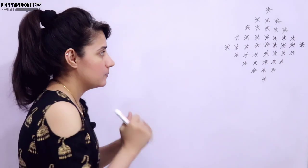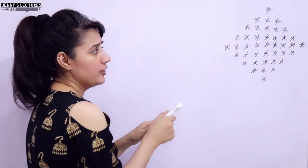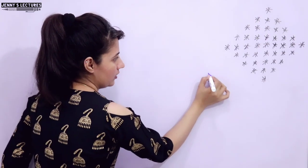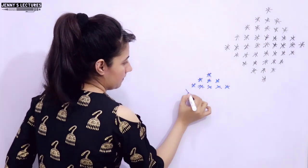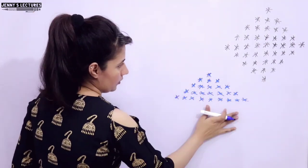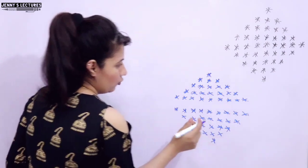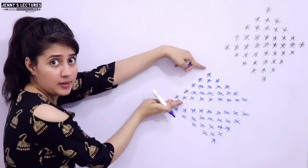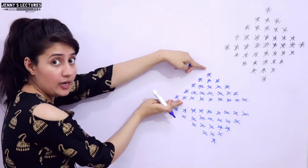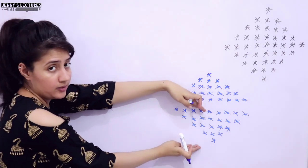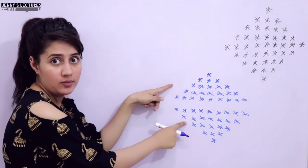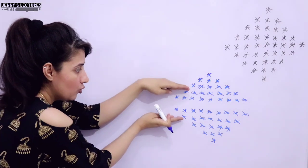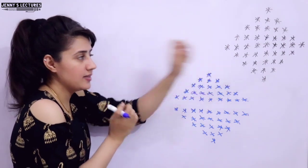Why am I saying it's easy? In the previous two videos, I discussed these patterns. In one video, we discussed how to print the full pyramid. In another video, I discussed how to print the inverted full pyramid. These are two different patterns. And if we combine both patterns, it will look something like this.